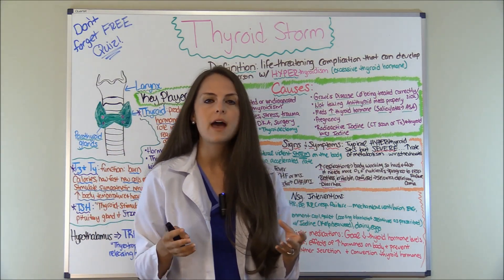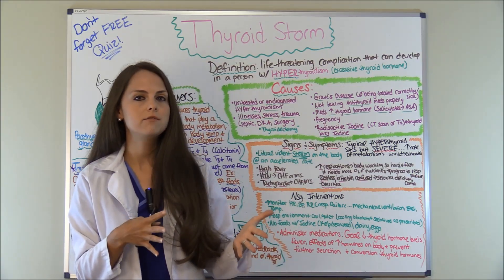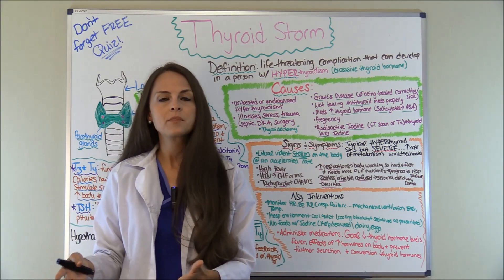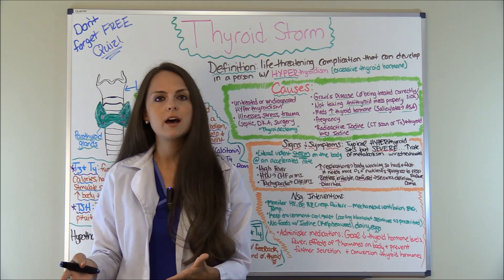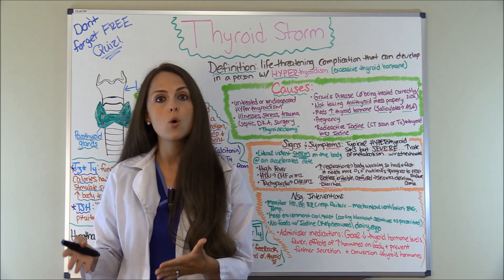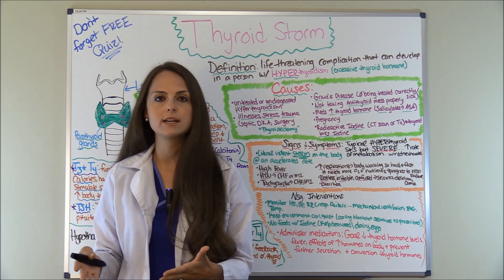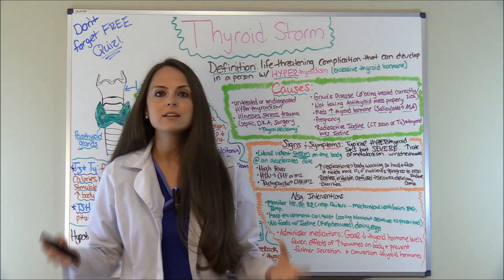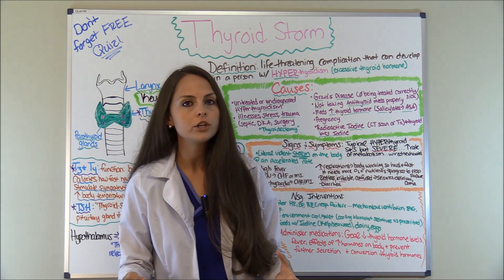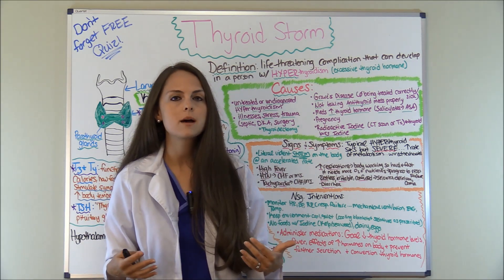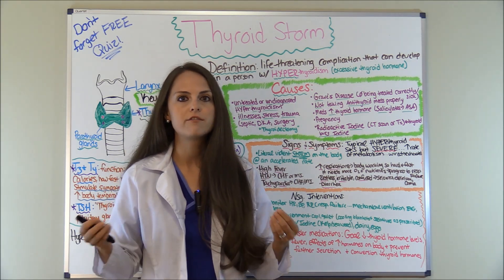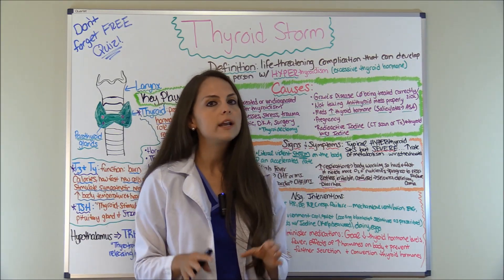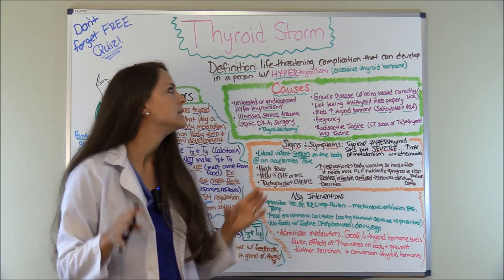Remember that, because a lot of people get this condition confused with myxedema coma, which is a complication of hypothyroidism. Just remember this condition as a violent storm on your body. Whenever thunderstorms come, they're violent, they're fast, they're accelerated — and that is what is going on in this condition.